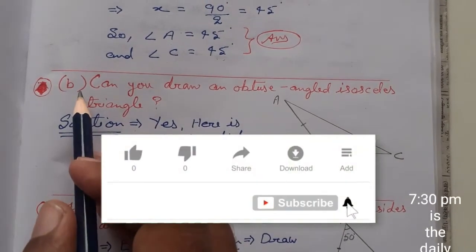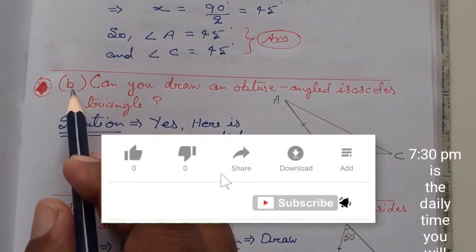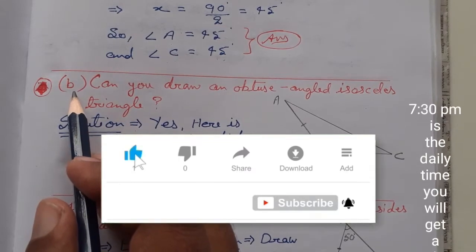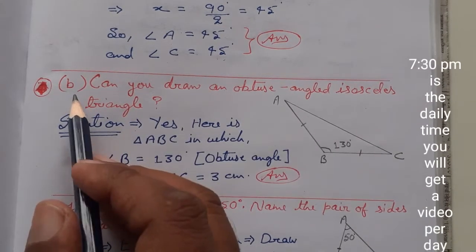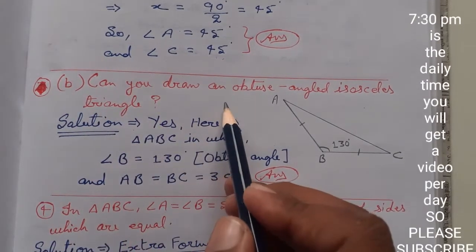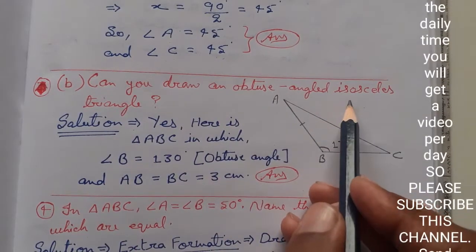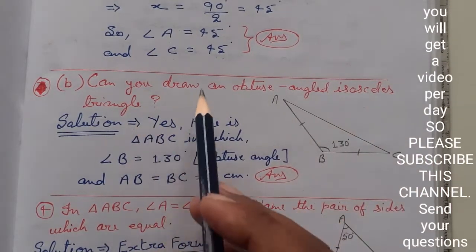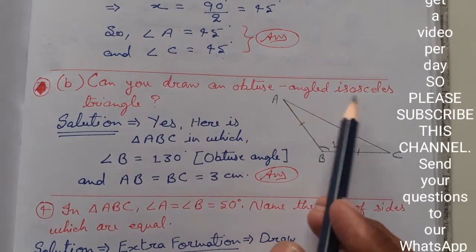Hi everyone, now we are going to do the second part of question number one of exercise 13C. Can you draw an obtuse angled isosceles triangle?